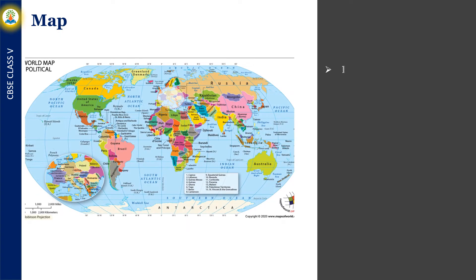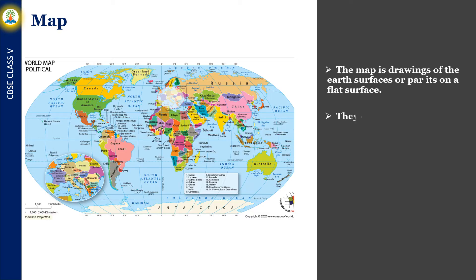A map is a drawing of the Earth's surface on a flat surface. Maps can be folded or rolled. When maps are put together, we get an atlas.